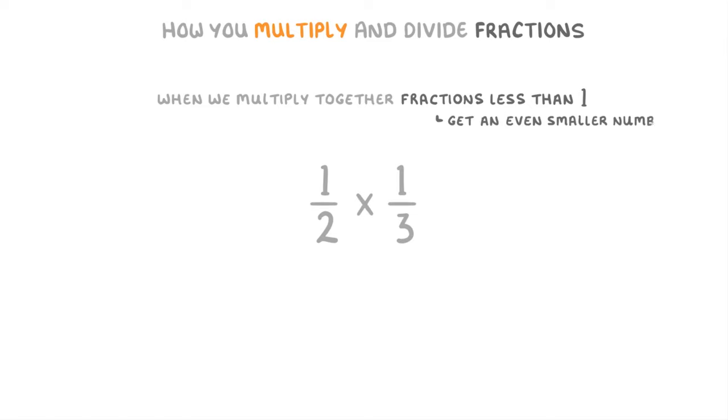One other thing to point out about multiplying fractions is that when we multiply together fractions that are less than 1, like 1 half times 1 third, we actually get an even smaller number, because we're taking a small portion of something that was already small.